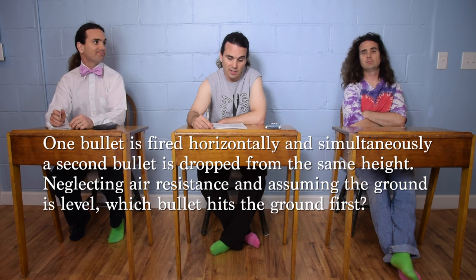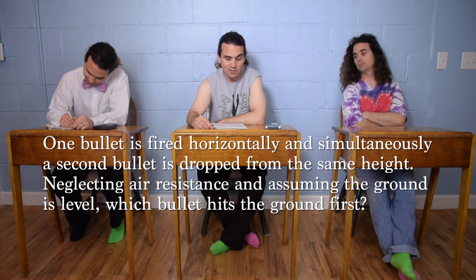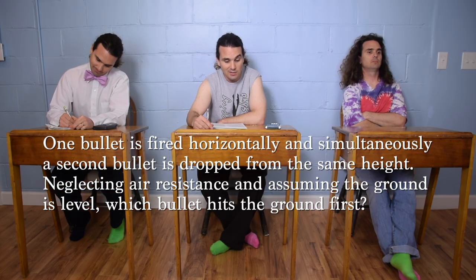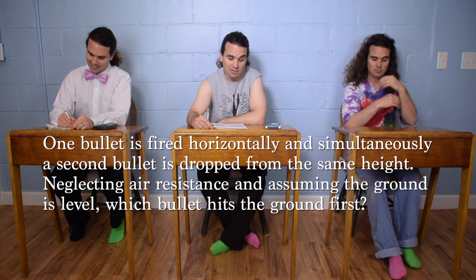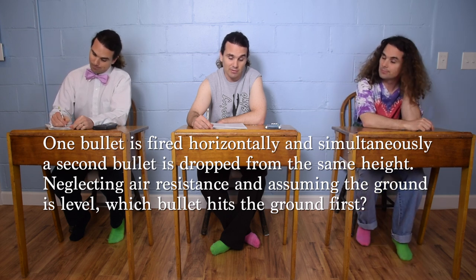One bullet is fired horizontally and simultaneously a second bullet is dropped from the same height. Neglecting air resistance and assuming the ground is level, which bullet hits the ground first?